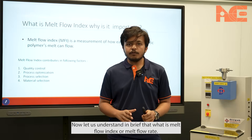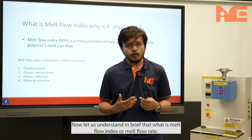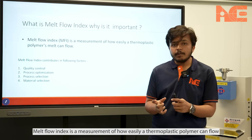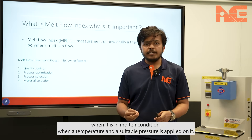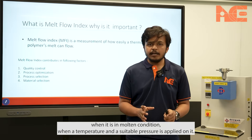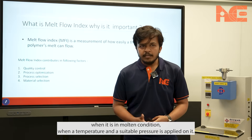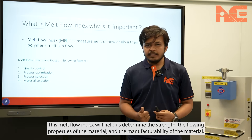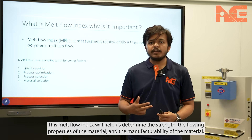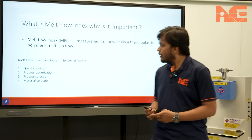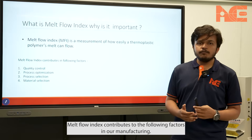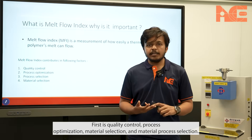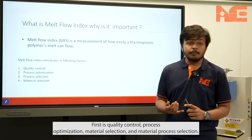Now let's understand in brief what is melt flow index or melt flow rate. Melt flow index is a measurement of how easily a thermoplastic polymer can flow when it is in molten condition, when a temperature and suitable pressure is applied on it. This melt flow index helps us determine the strength, flowing properties, and manufacturability of the material. Melt flow index contributes to quality control, process optimization, material selection, and process selection.